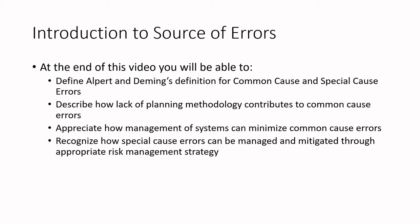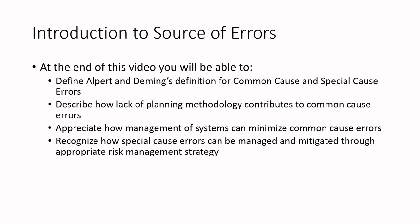So we're going to talk about sources of errors today. At the end of this video, you'll be able to define Alpert and Deming's definition for common cause and special cause errors. That sounds like a lot of vague words but it will make sense shortly. We're going to describe how lack of planning methodology contributes to most common cause errors. We'll appreciate how management of systems can minimize common cause errors and recognize how special cause errors can be managed and mitigated through appropriate risk management strategy.